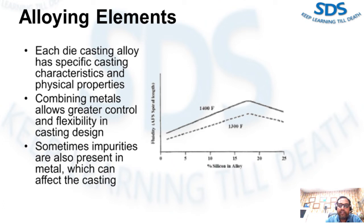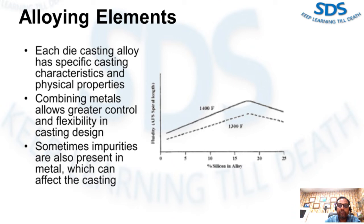Combining metals allows greater control and flexibility in casting design. Sometimes impurities are also present in metal, which can negatively affect the final casting. After this video, you will be able to explain the purpose of adding each major element, explain why minor elements are added and why impurities need to be controlled, and determine which modifier element to add to achieve a specific result. You can also use this information to explain the effect on casting properties or appearance when adding certain elements together.